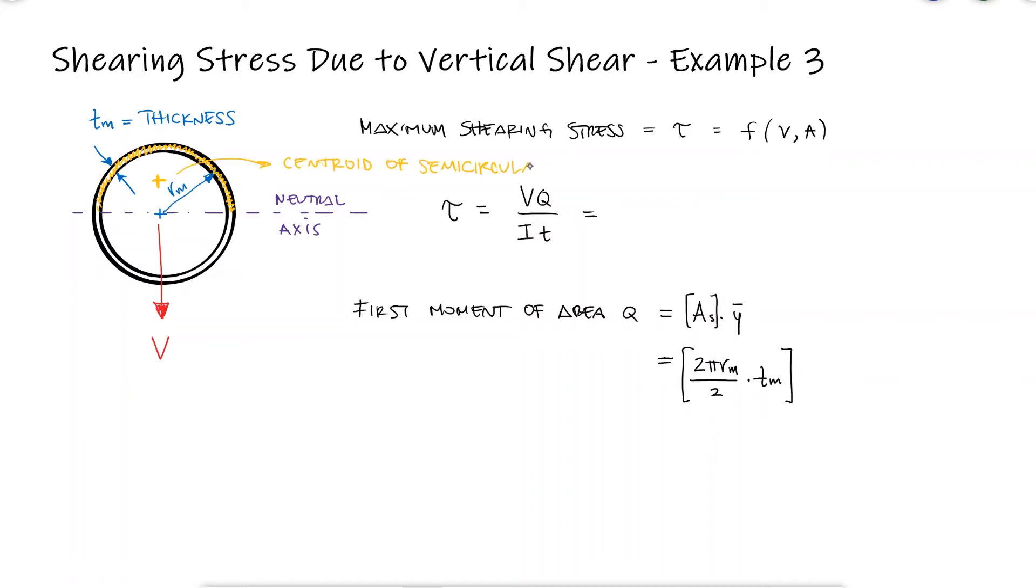Looking up the centroid of a semicircular arc online, we find that it's 2r over pi.